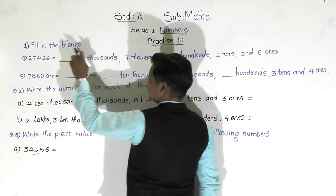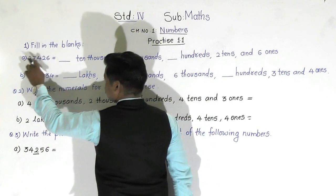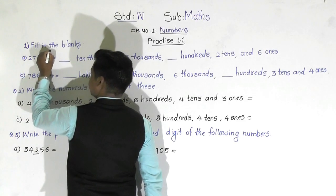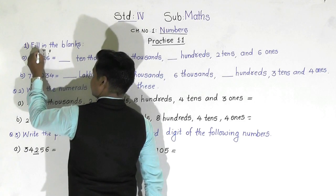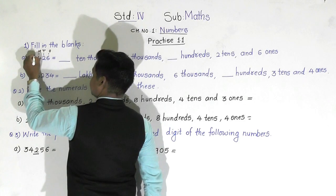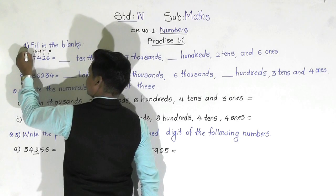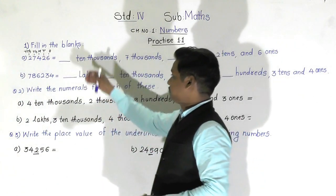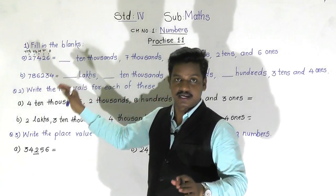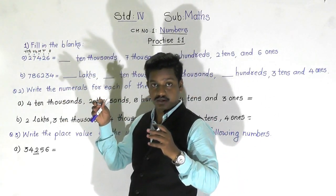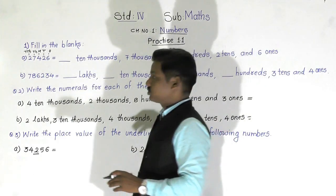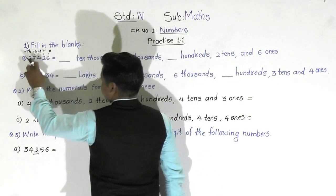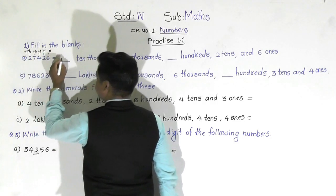The dash before 10,000 means the digit at the 10,000 place — that is what we have to write here. So if you remember the place value chart: ones place, tens, hundreds, thousands, and ten thousands. At the ten thousands place, the digit is two.